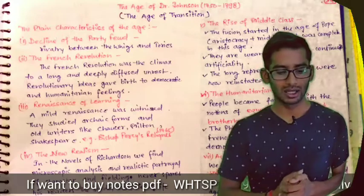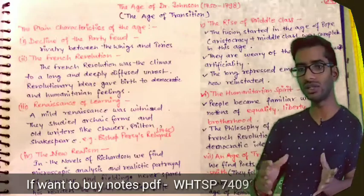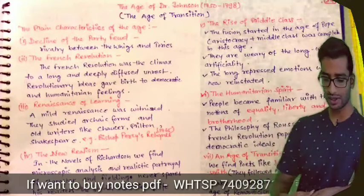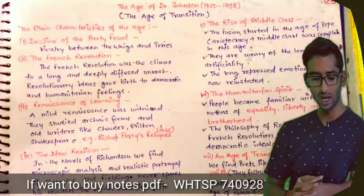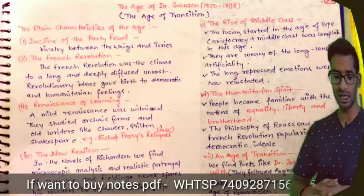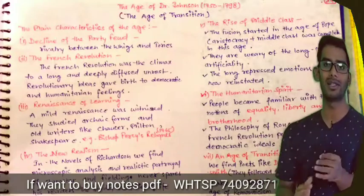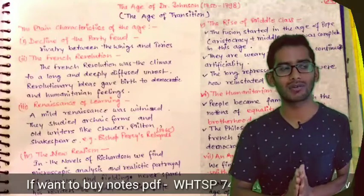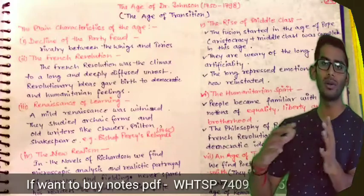The second thing which had great influence on the social context was the French Revolution. The French Revolution was the climax to a long and deeply diffused unrest. Revolutionary ideas gave birth to democratic and humanitarian feelings in society. Whatever comes in society becomes the point of discussion, and then later it comes to literature.